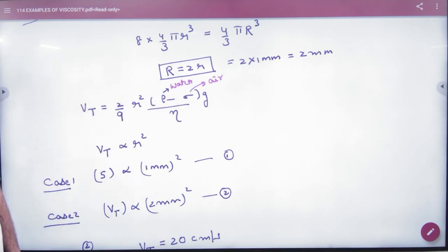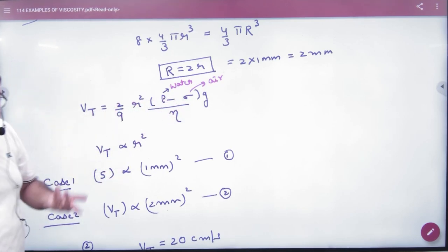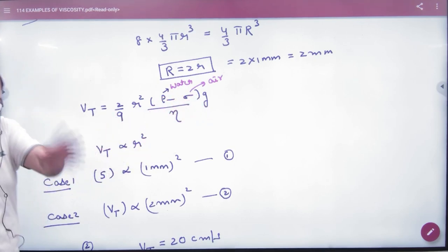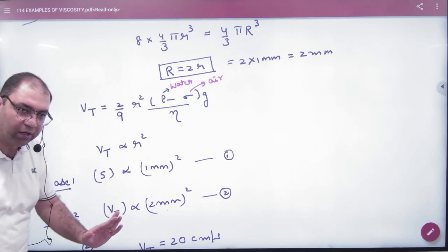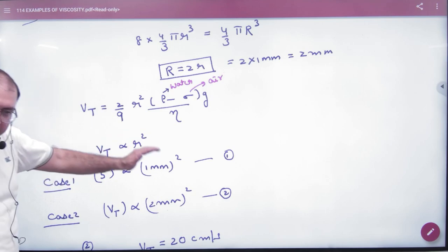Now when the big drop is falling, then the density difference will not change, no difference in g, eta water is the same big and small, 2 by 9 is the same. So what is the factor that changes here? Small r. So terminal velocity is directly proportional to r square.